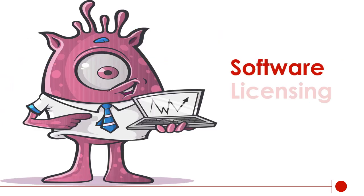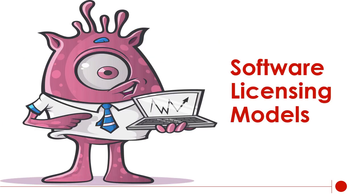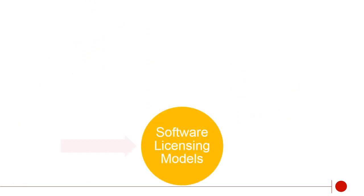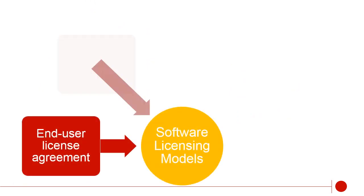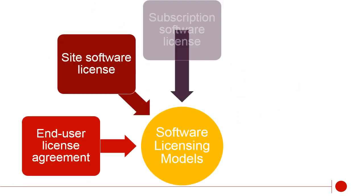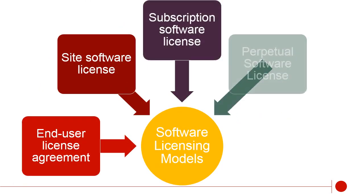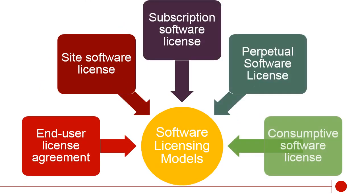Software licensing models. Commonly used software licensing models are: end user license agreement (EULA), site software license, subscription software license, perpetual software license, and consumptive software license.